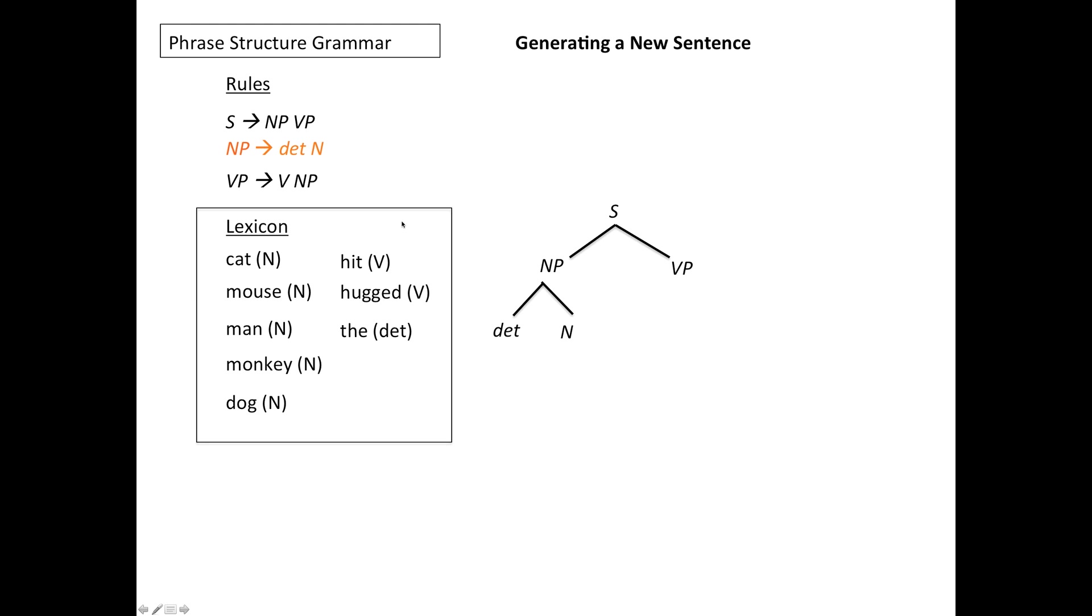Look at noun phrase. It too has two constituents, determiner and noun. Determiner and noun are names for elements in the lexicon. So at this point I have a choice.